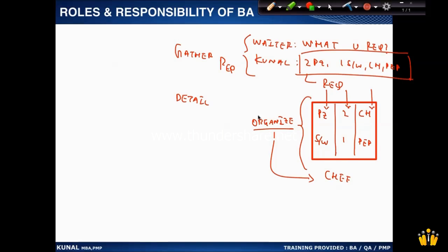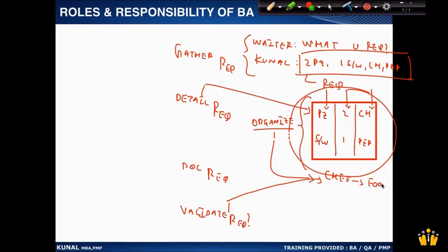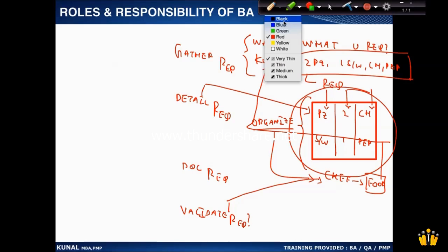We can say the waiter has detailed and documented my requirements. After gathering and documenting, the waiter repeats the order to cross-check — that is validation of requirements. After validation, he hands the requirement to the chef, who prepares the food based on those requirements, and later the food is served to the customer. That is typically what a waiter does.